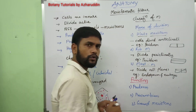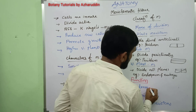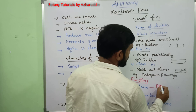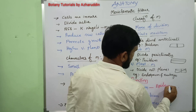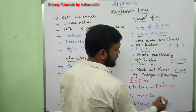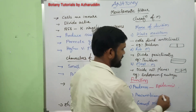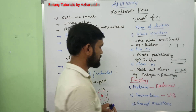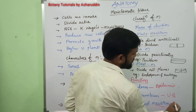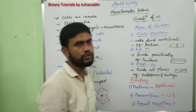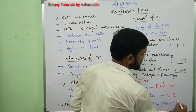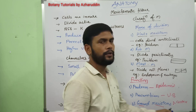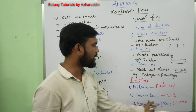Protoderm divides anticlinally and forms epidermis. Procambium divides to produce cambium or vascular tissues. Ground meristem forms ground tissues such as cortex, parenchyma, colenchyma, and medulla. These are all formed by ground meristems. This is about meristematic tissue.